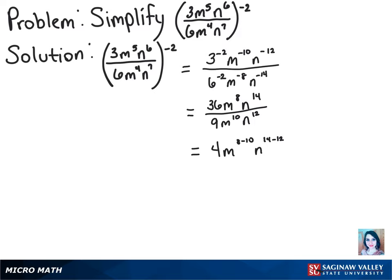Once we subtract those, we'll have our final answer of 4 times n squared over m squared because 8 minus 10 gave us negative 2 and we had to throw it in the denominator.